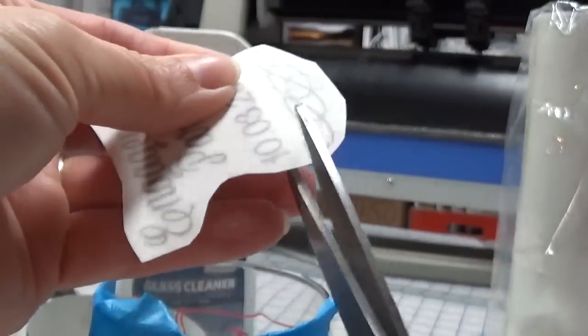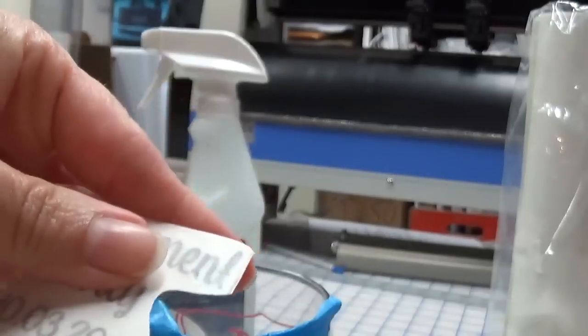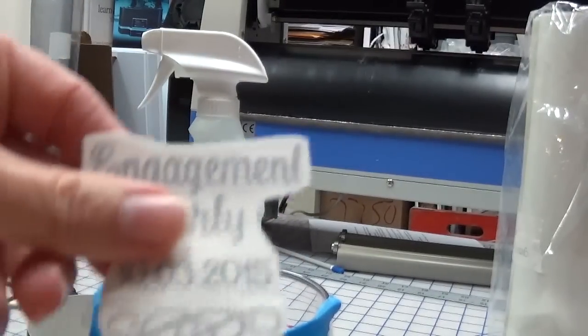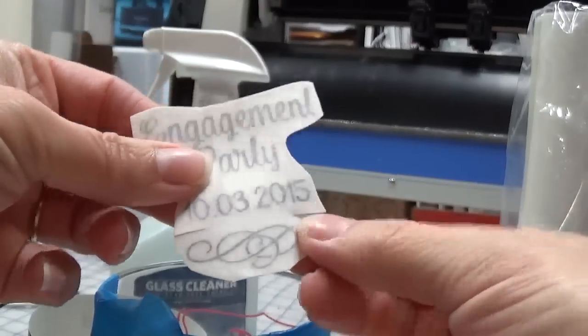I'm also going to put a couple of slits right here just to help that flourish there on the bottom. So as you can see, I've trimmed it around.